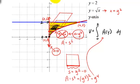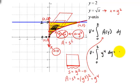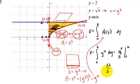So the volume equals the integral from 0 to 2 of y to the fourth, dy. That equals y to the fifth over 5, evaluated from 0 to 2. Plugging in 2, we get 32 over 5; plugging in 0, we get 0. So the volume of our solid is 32 fifths.